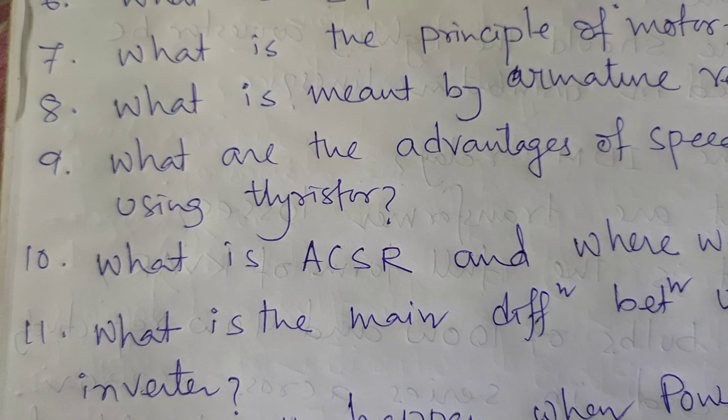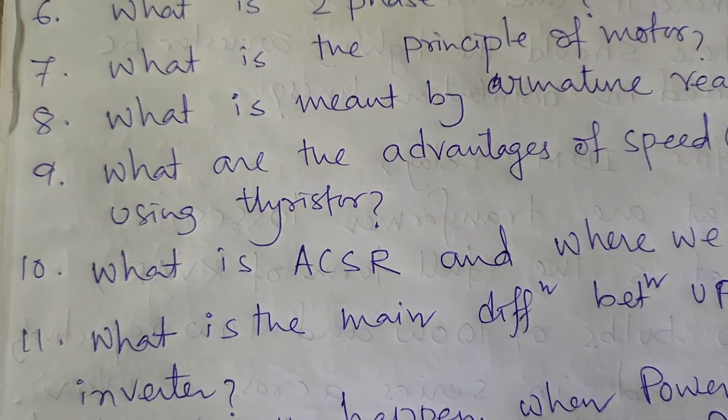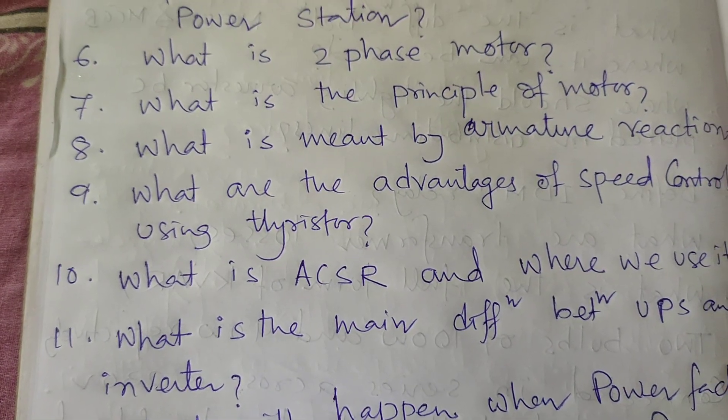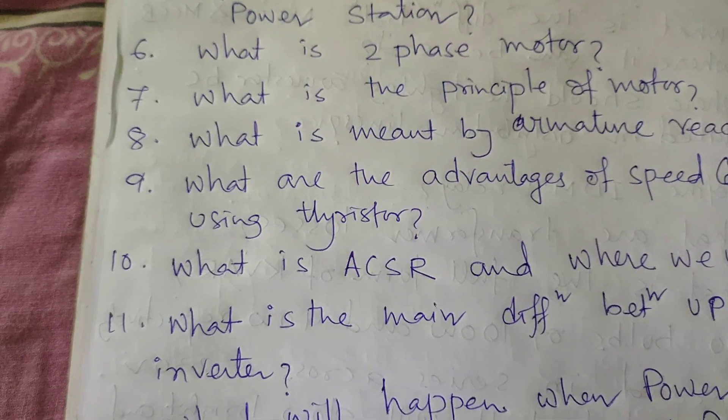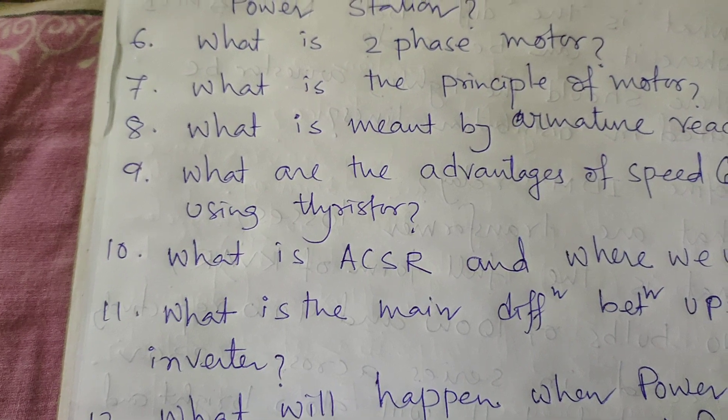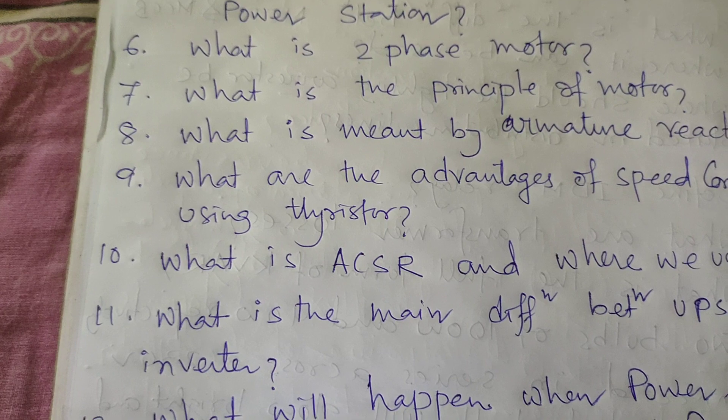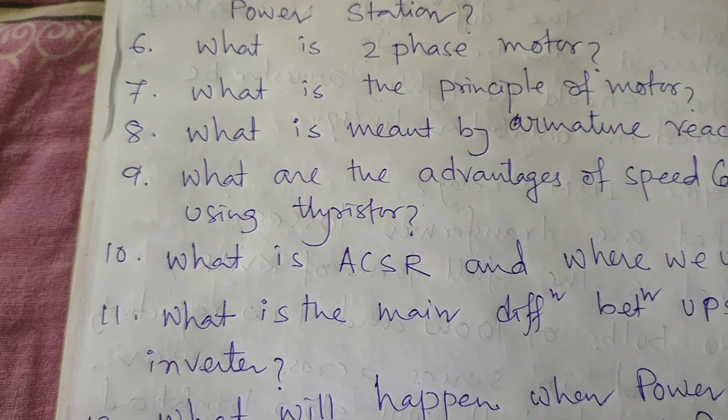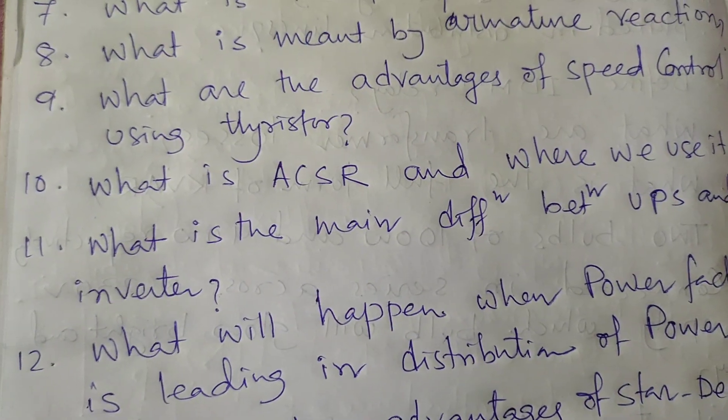Next question: What is ACSR and where do we use it? ACSR means aluminum conductor steel reinforced. It is used in conductor manufacturing for transmission, generation, and distribution of energy. These conductors are used in transmission and distribution systems.